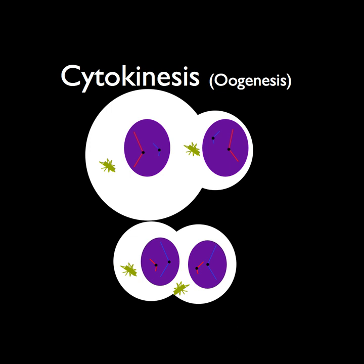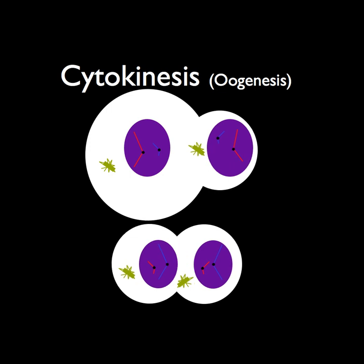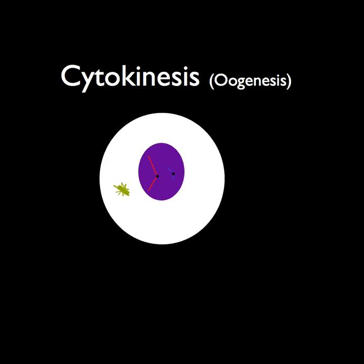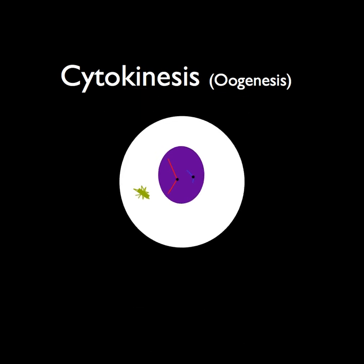The egg must be much larger than the sperm so that, after fertilization, it can begin to develop a zygote. And here is a large single egg, much bigger than a sperm, but still carrying the same haploid amount of genetic material.